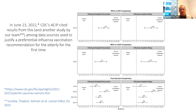In June of 2022, the ACIP cited results from this study and another study by our team among the data sources used to justify a preferential influenza vaccination recommendation.